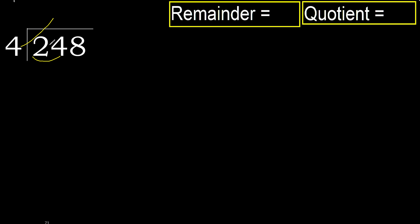4 multiplied by 7 is 28 — that is greater. 4 multiplied by 6 is 24 — not greater. Ok, subtract. Next.